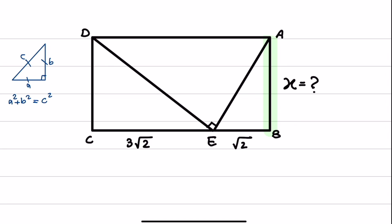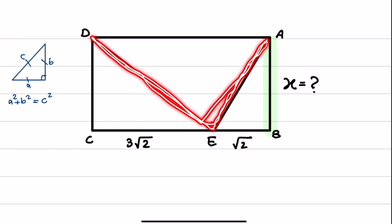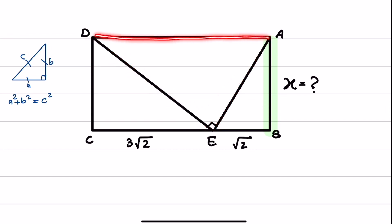If we start with AED, we can write the formula using these two sides, and we know the length of AD. AD is equal to square root of 2 plus 3 times square root of 2. So AD is 4 times square root of 2. So if we start applying the formula, AE squared plus ED squared is equal to AD squared.